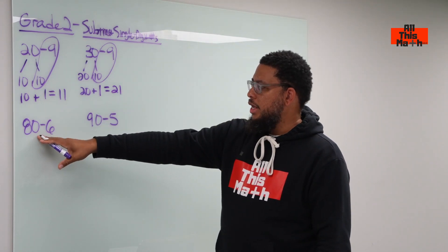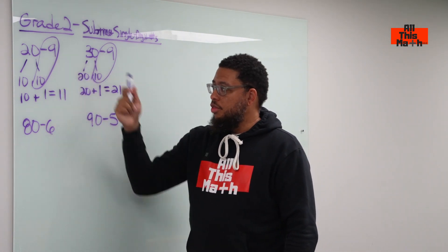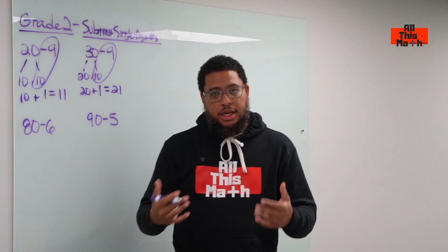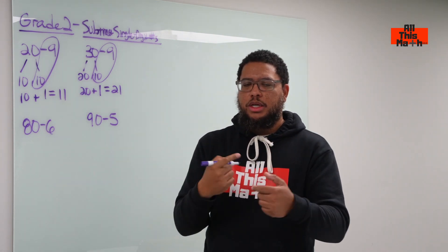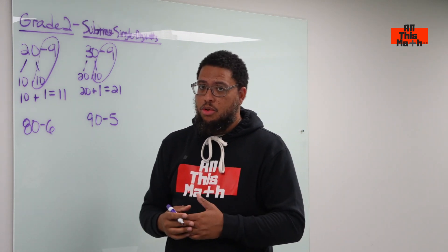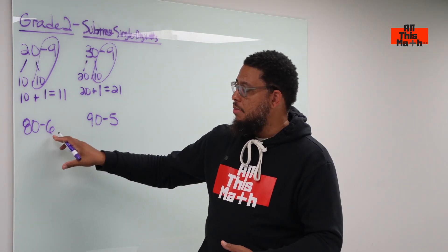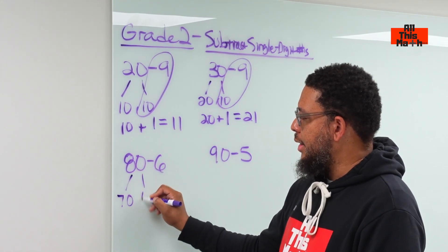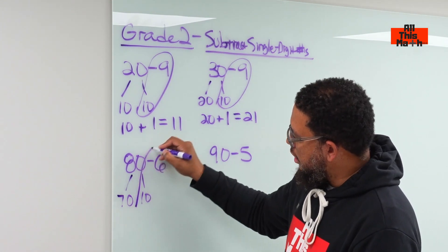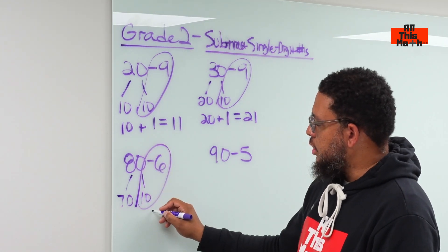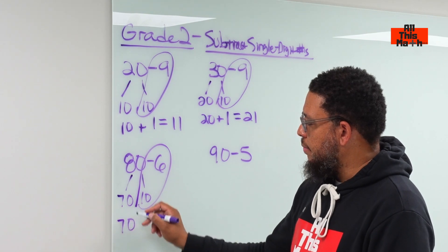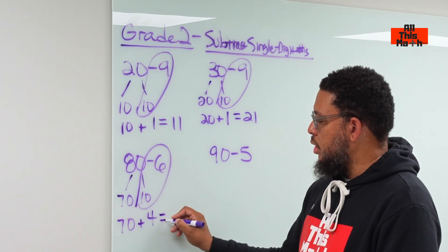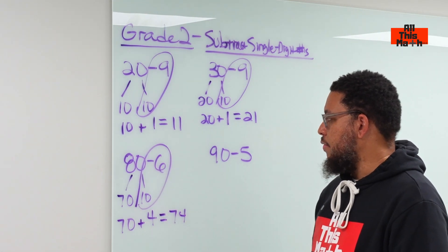Then we go to the next example: 80 minus 6. 80 is a much larger number, but we still use the same method. We want to subtract 6 from 10, but where are we getting the 10 from? We decompose 80 and break it down into 70 and 10. Then we do 10 take away 6, which gives us 4. Then we have 70 that was already part of 80, and we combine that with the difference between 10 and 6, which is 4, leaving us with a difference of 74.